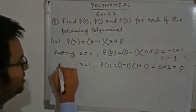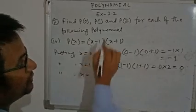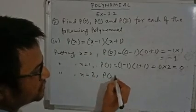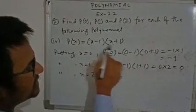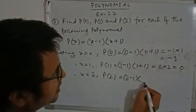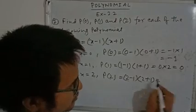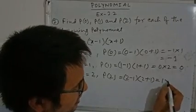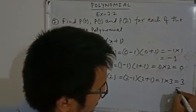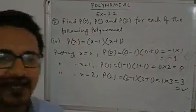Now putting X equals 2: P(2) — same way, replace X by 2 — so (2 minus 1)(2 plus 1). That is 1 into 3, which equals 3. In this way we solve this type of question.